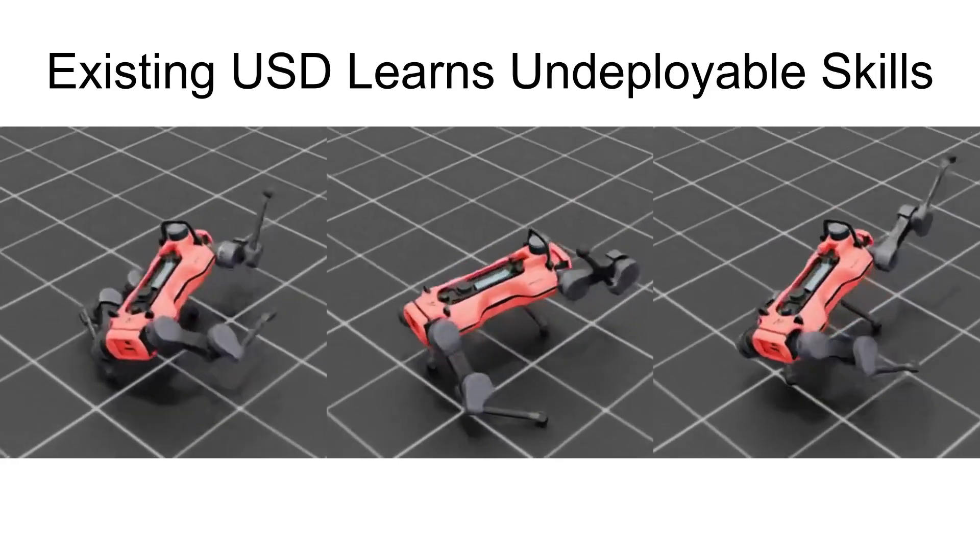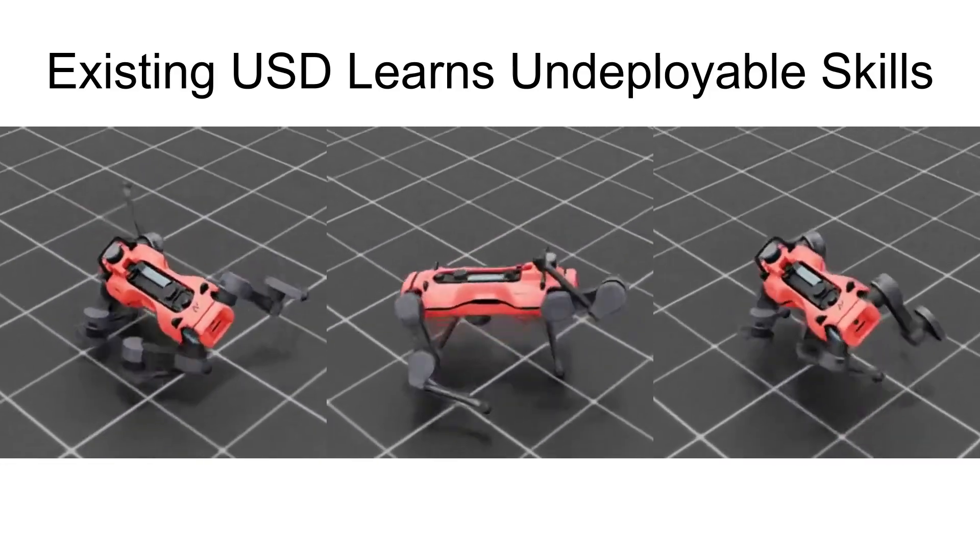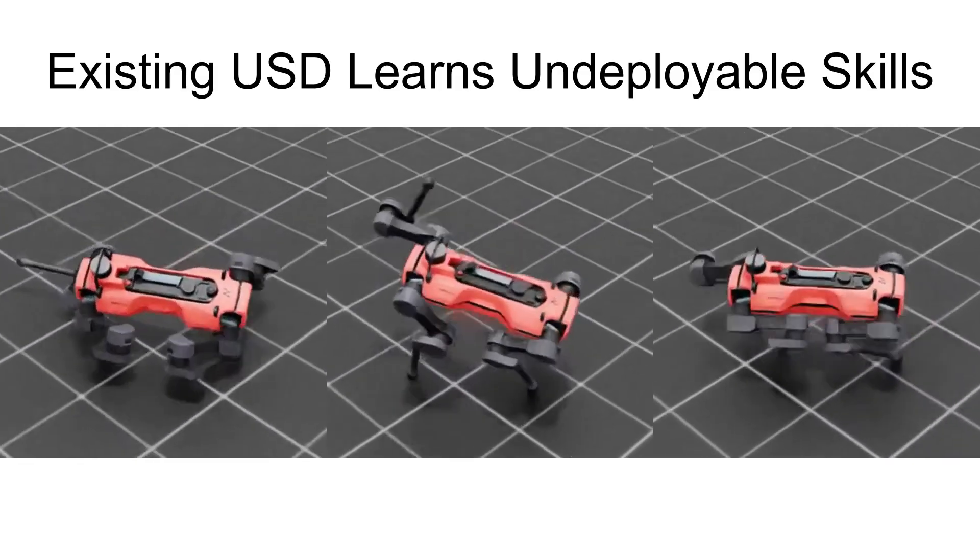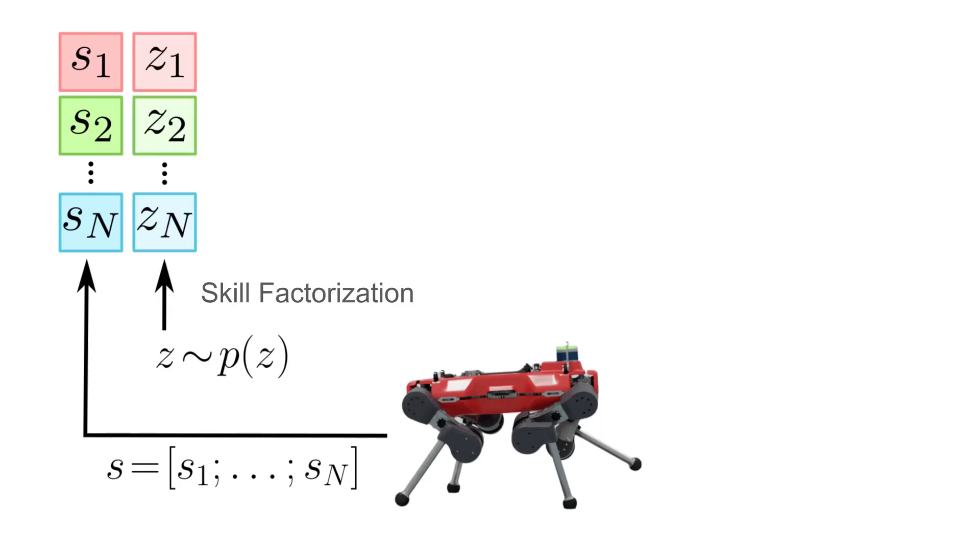Existing unsupervised skill discovery methods often produce skills that are unsafe, unstable, or simply not useful on real hardware. The first step in our framework is factorization. We divide the robot's state space into a set of distinct factors. Each state factor is then associated with a corresponding latent skill vector Z, creating a disentangled representation for control.